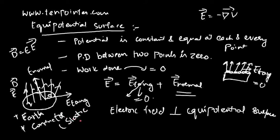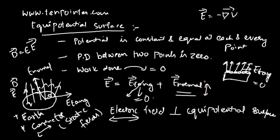For a real field, you cannot strictly say a conductor behaves like an equipotential surface, but you could assume it has properties similar to one. For static fields, it works exactly the same as an equipotential surface. This is a potential one-mark equation, and E-normal is also a potential one-mark equation for GATE, IES, and PSU exams.